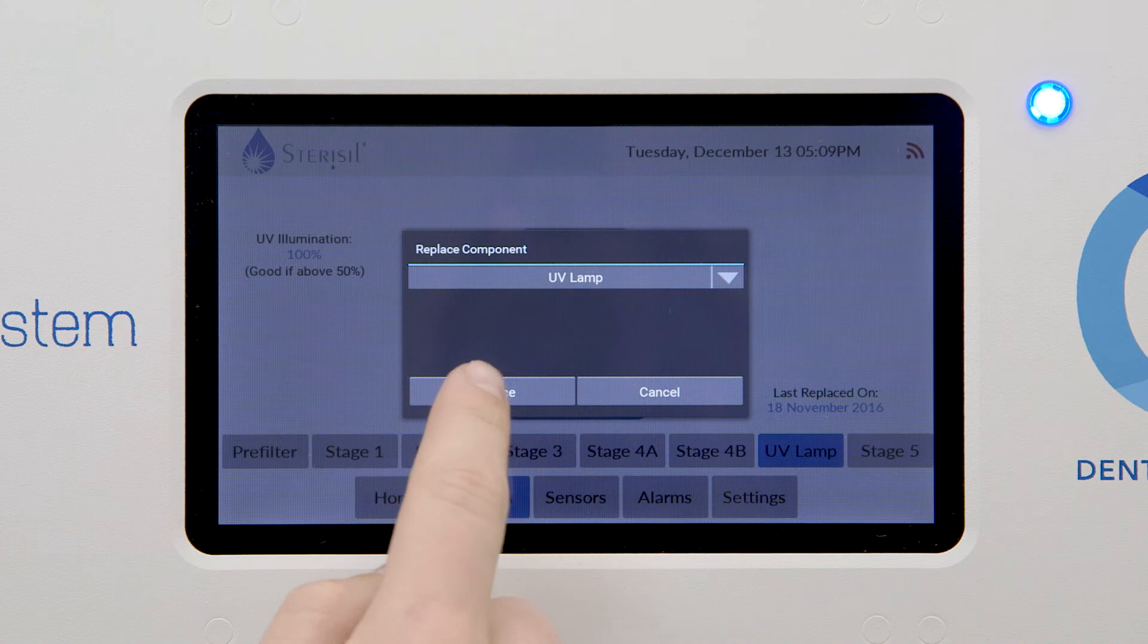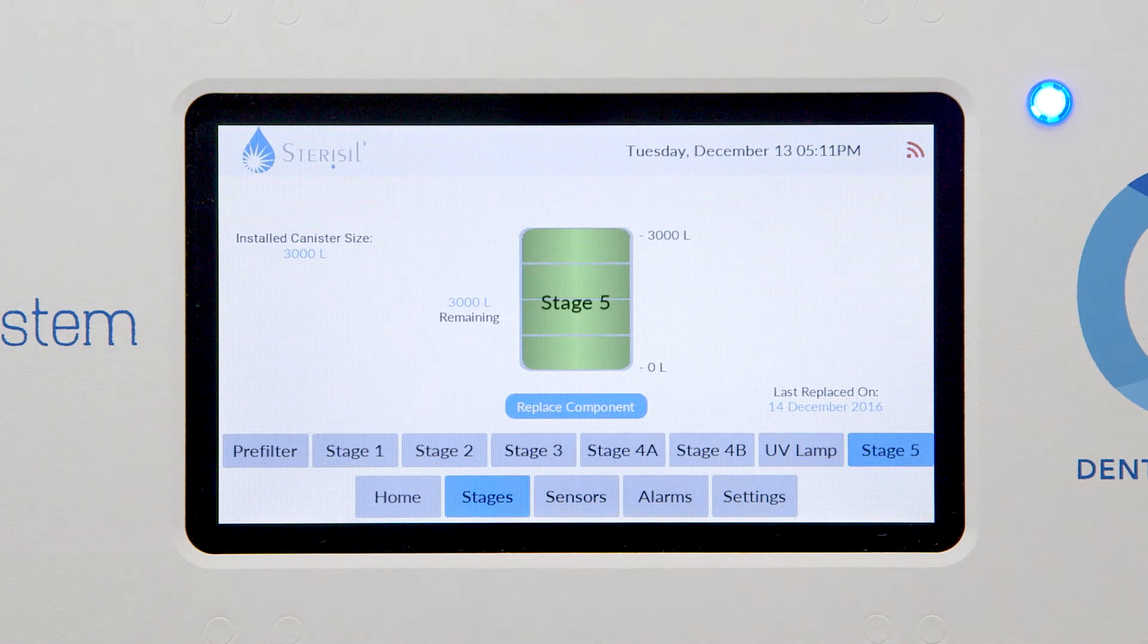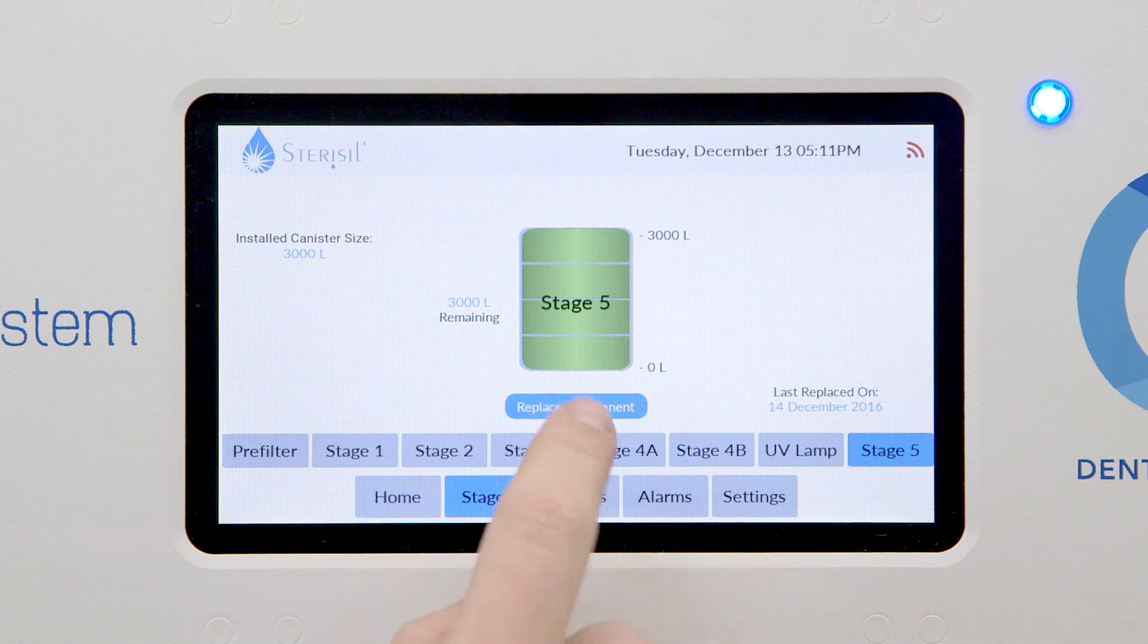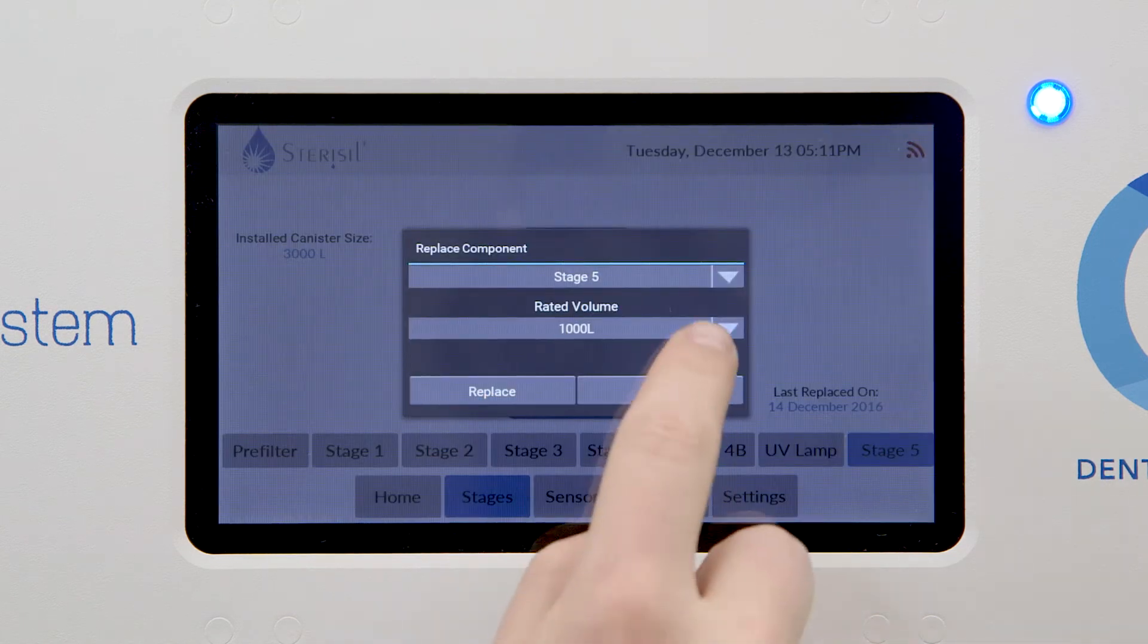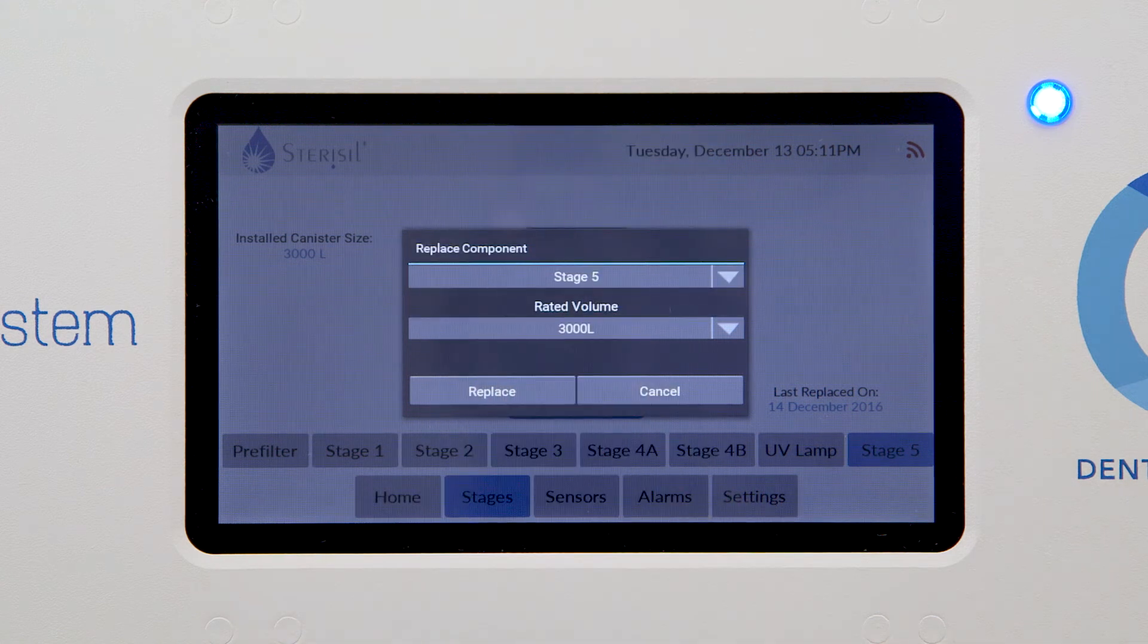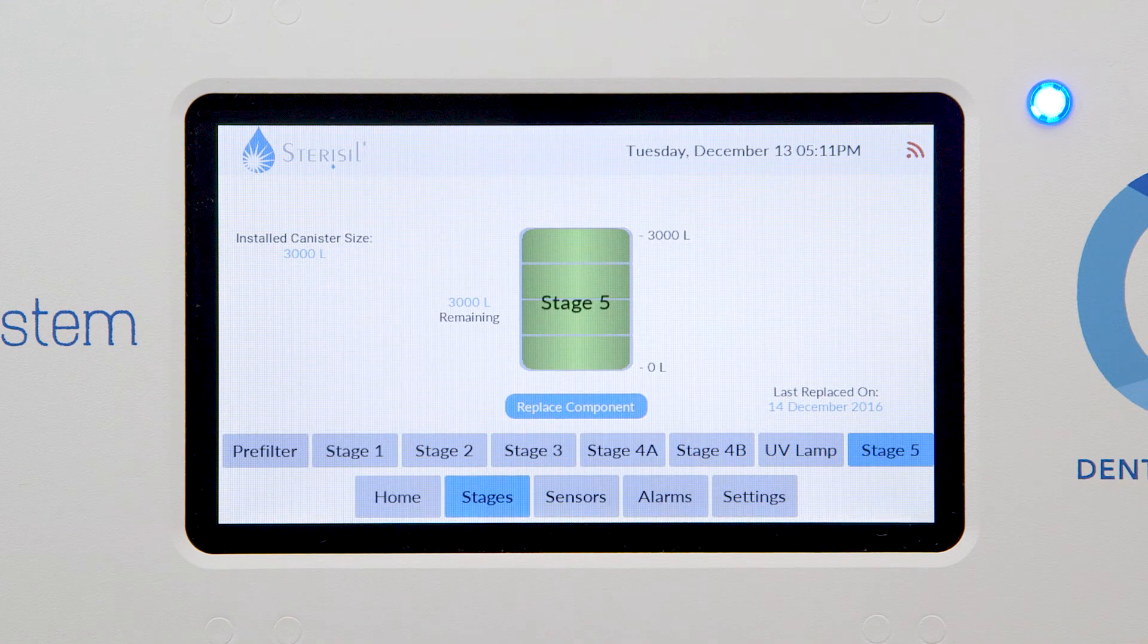Stage 5's lifespan is based on a liter count. Each Stage 5 is marked with its liter capacity. From the Stage 5 Details screen, verify that your maximum capacity matches the capacity printed on the cartridge. If not, reset the count to the correct number.